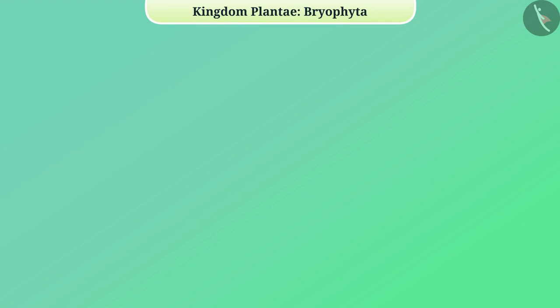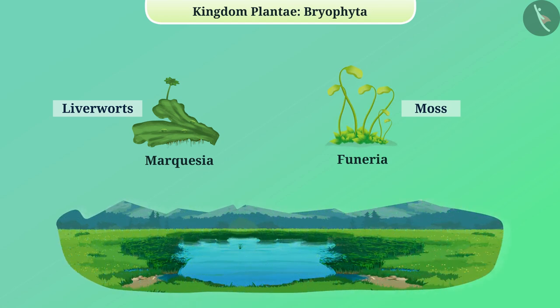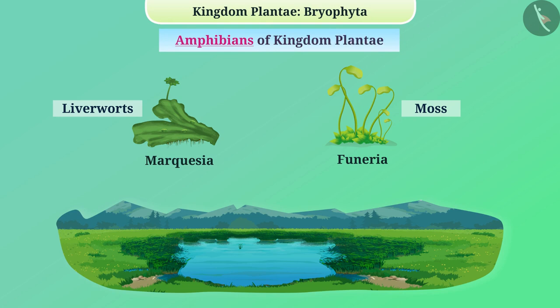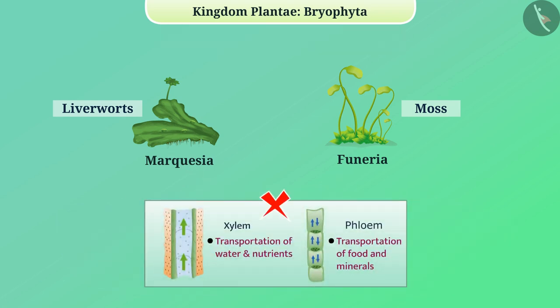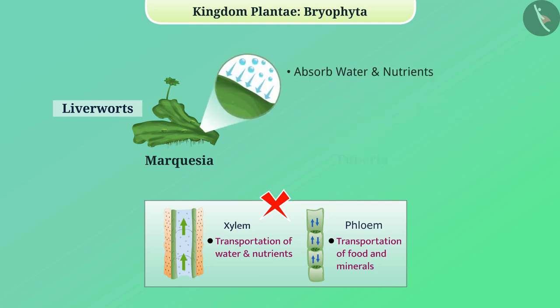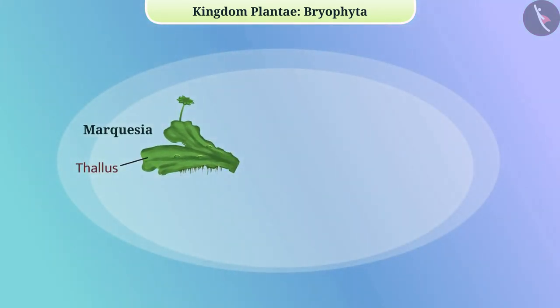Now let's discuss Bryophyta. In this class, liverworts such as Marchantia and mosses such as Funaria are included. They are often found in moist and shady areas of hills. Bryophytes are also called the amphibians of Kingdom Plantae because plants of this class live on land but depend on water for sexual reproduction. Their body does not have tissues for conduction of water and other substances; they absorb water and nutrients from the surface, carried from cell to cell. Their body is thallus-like.